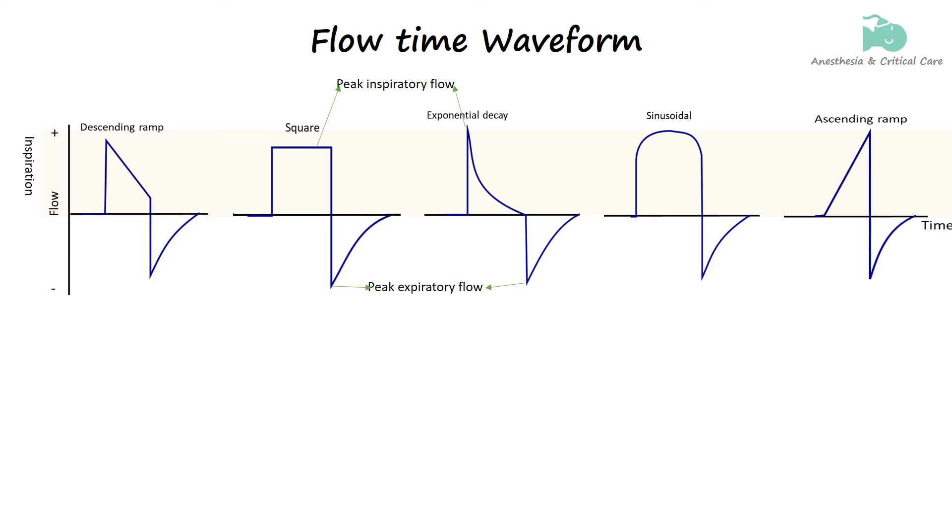When the patient exhales, the flow reverses direction, moving out of the lungs and away from the ventilator. This reversed flow is plotted as a negative value because it represents movement in the opposite direction.